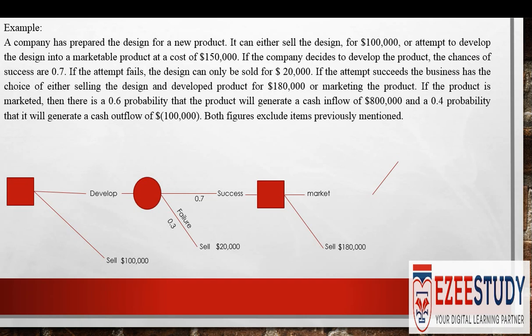If the product is successfully developed, the company will have another choice: market the product or sell the successfully developed product for $180,000. If it decides to market the product, there will be a 60% chance of earning $800,000 in cash inflows and a 40% chance of having negative cash flows of $100,000.